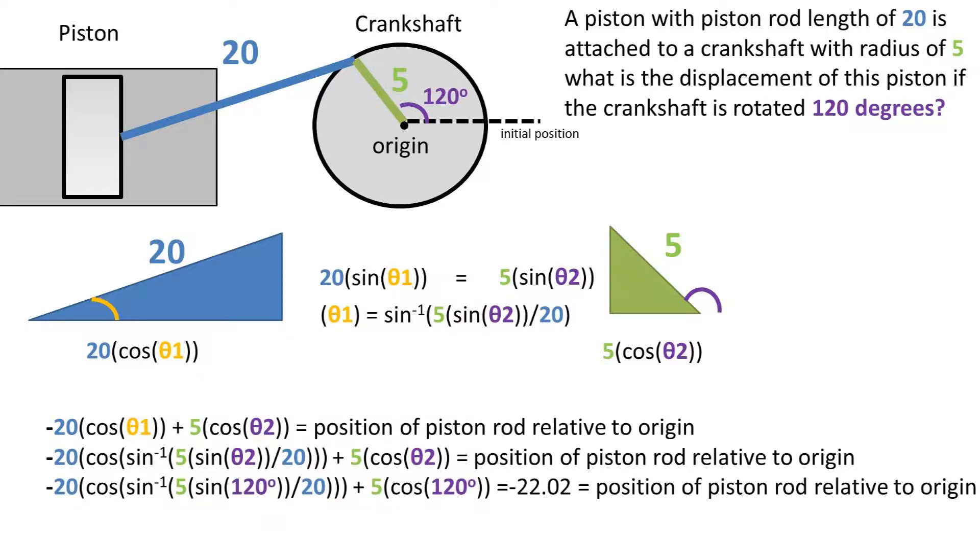Plugging in our angle of 120 degrees into the equation equals negative 22.02 units from the origin to the end of the piston rod.